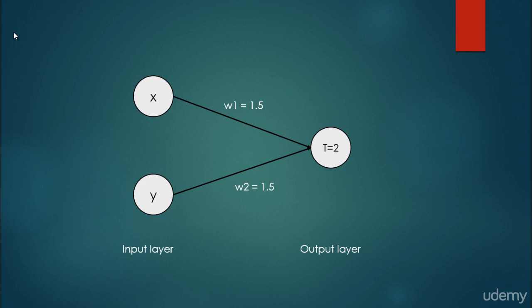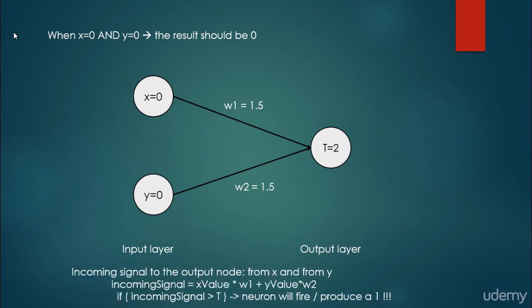We come to the conclusion that weight w1 is equal to 1.5 and weight w2 is equal to 1.5. Let's consider the situation when x is equal to 0 and y is equal to 0 — the first line in our AND logical table. The result should be 0. The incoming signal to the output node is equal to the value of x times w1, plus the value of y times w2.